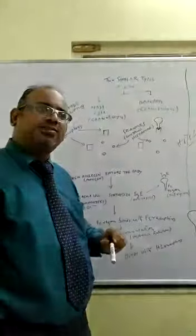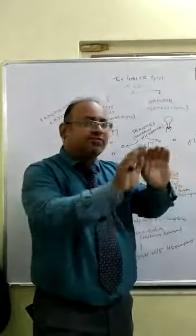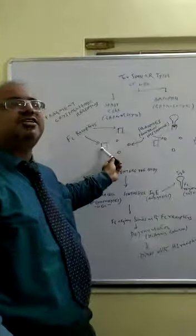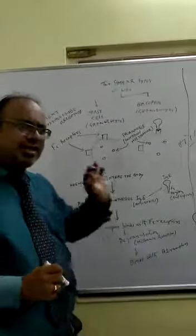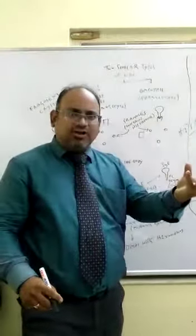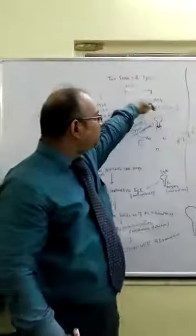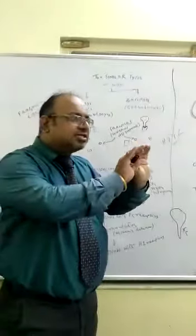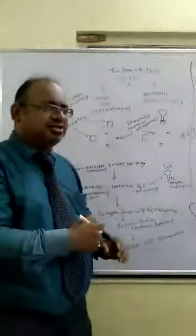Mast cells and basophils have many receptors — what we call FC receptors. FC receptors are Fragment Crystallizable receptors. These FC receptors correspond to the FC region of an antibody found in the immune system. Mast cells and basophils have these FC receptors on their surface.